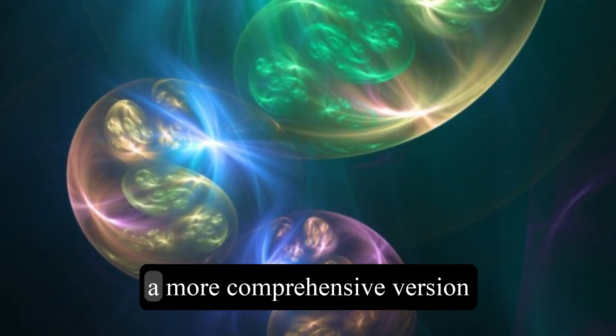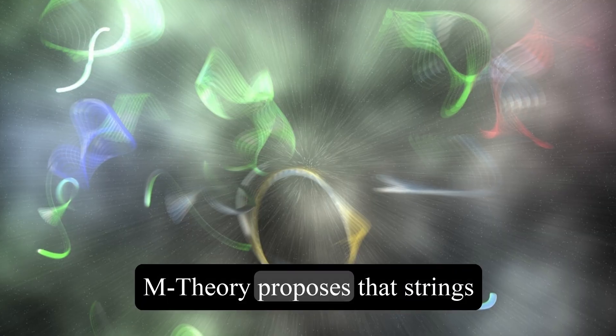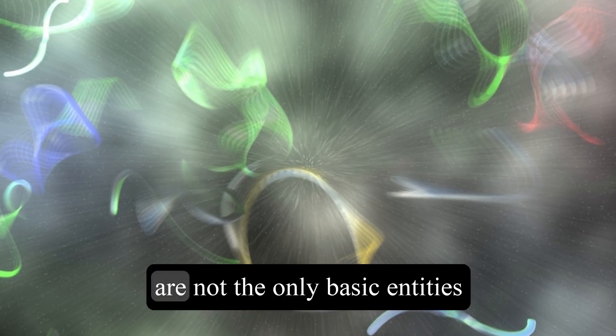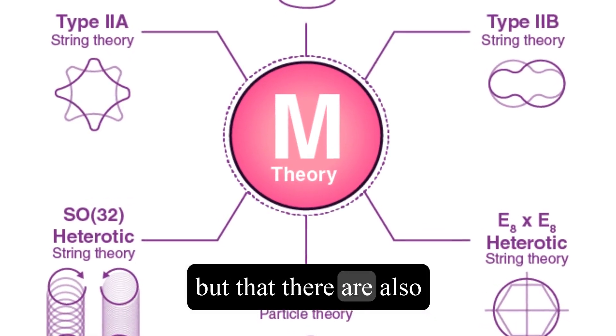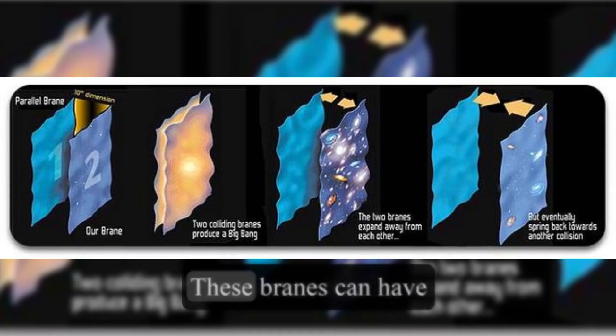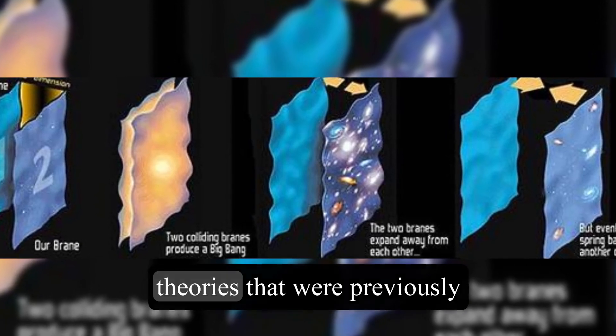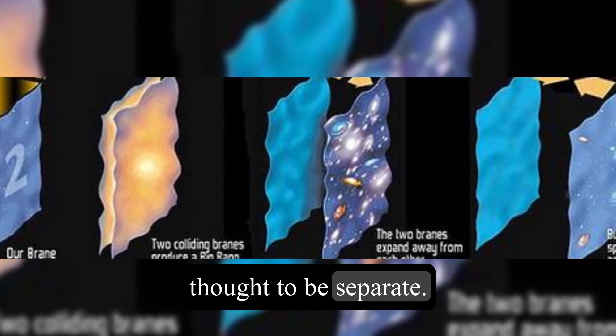Within the realm of string theory, a more comprehensive version called M-theory emerged. M-theory proposes that strings are not the only basic entities but that there are also higher-dimensional objects known as branes. These branes can have various dimensions, and they play a crucial role in unifying the different string theories that were previously thought to be separate.